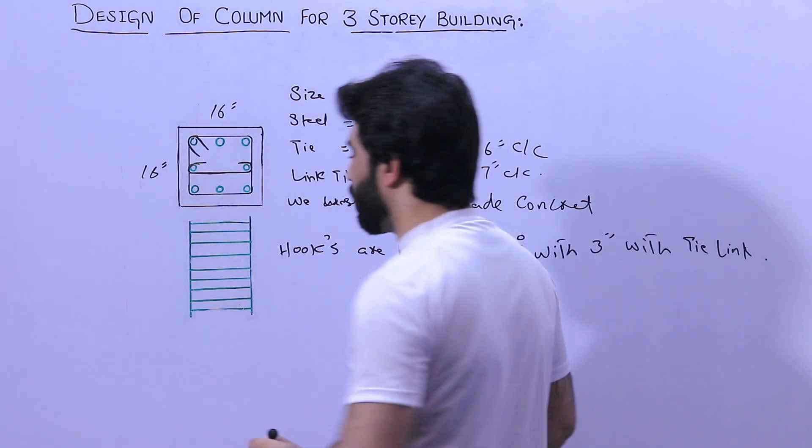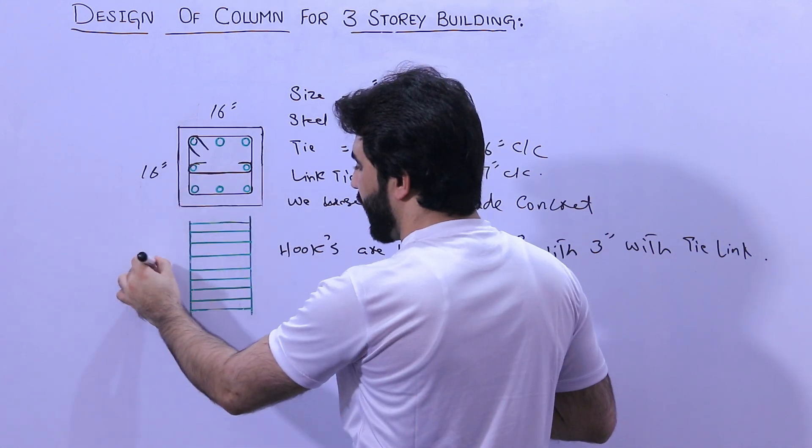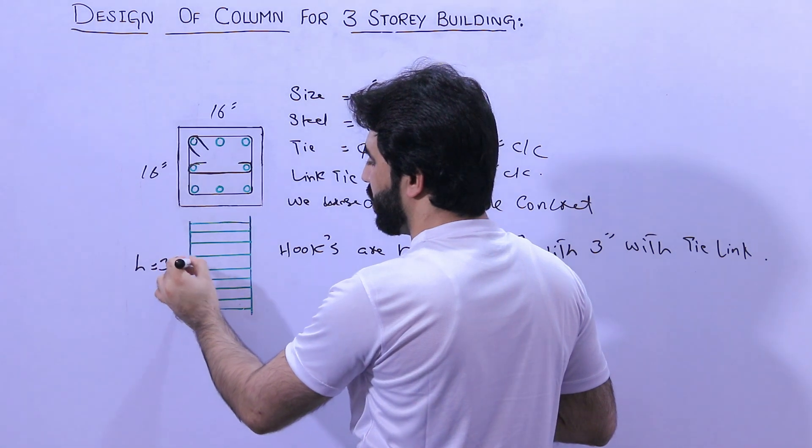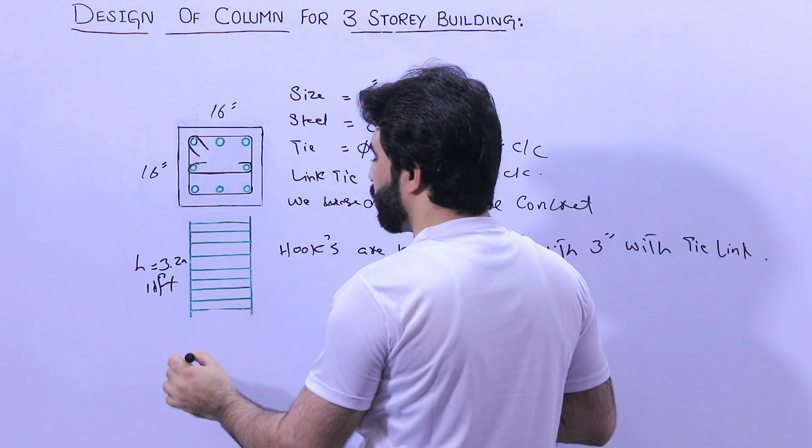Now let me guide you for the spacing of the stirrups ties. The height is here 3.2 meter or you can say 11 feet.